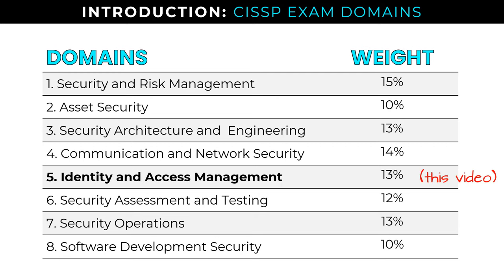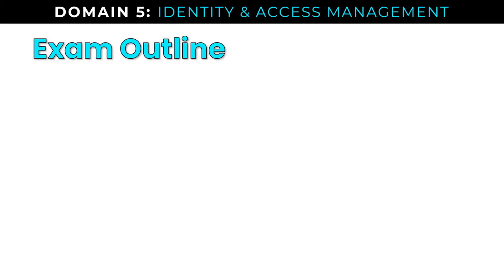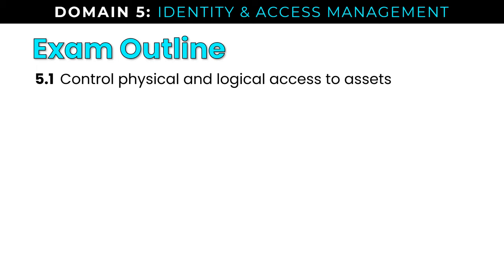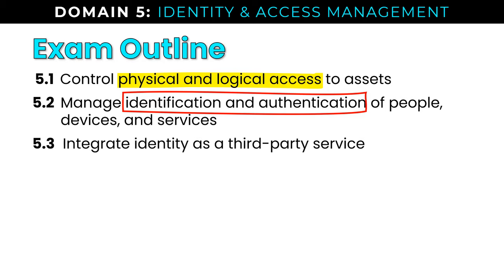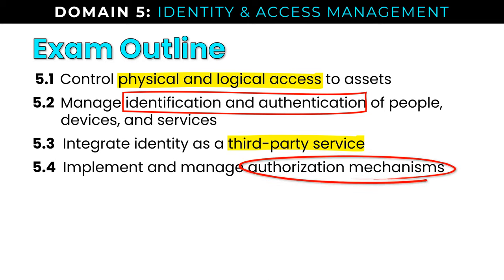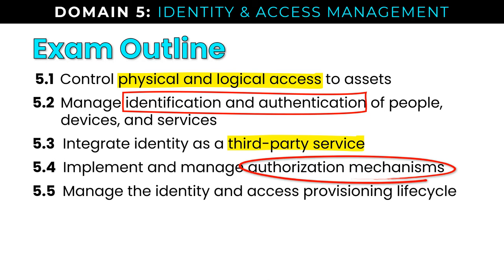Today we are focused on domain 5, identity and access management. Let's take a look at the official outline from the ISC Squared website. We have: control physical and logical access to assets; managing identification and authentication — accountability is another term that comes into play here; integrating identity as a third-party service, covering the three most popular standards; managing authorization mechanisms, another key memorization area; and managing the identity and access provisioning lifecycle.